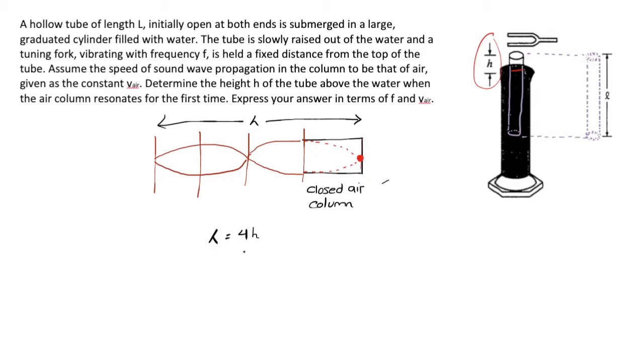Therefore, we can determine that the height desired, by dividing both sides by four, is lambda over four. Now, lambda is not an acceptable answer. We have not been given the wavelength associated with this frequency, but we can find it easily enough by stating the wave equation: v equals lambda f, velocity of wave propagation equals wavelength times frequency, where we know that our wave propagation speed is equal to v_air, the constant they described. We may divide both sides by f to find that v_air over f is equal to the wavelength. And that is an acceptable substitution for the lambda.